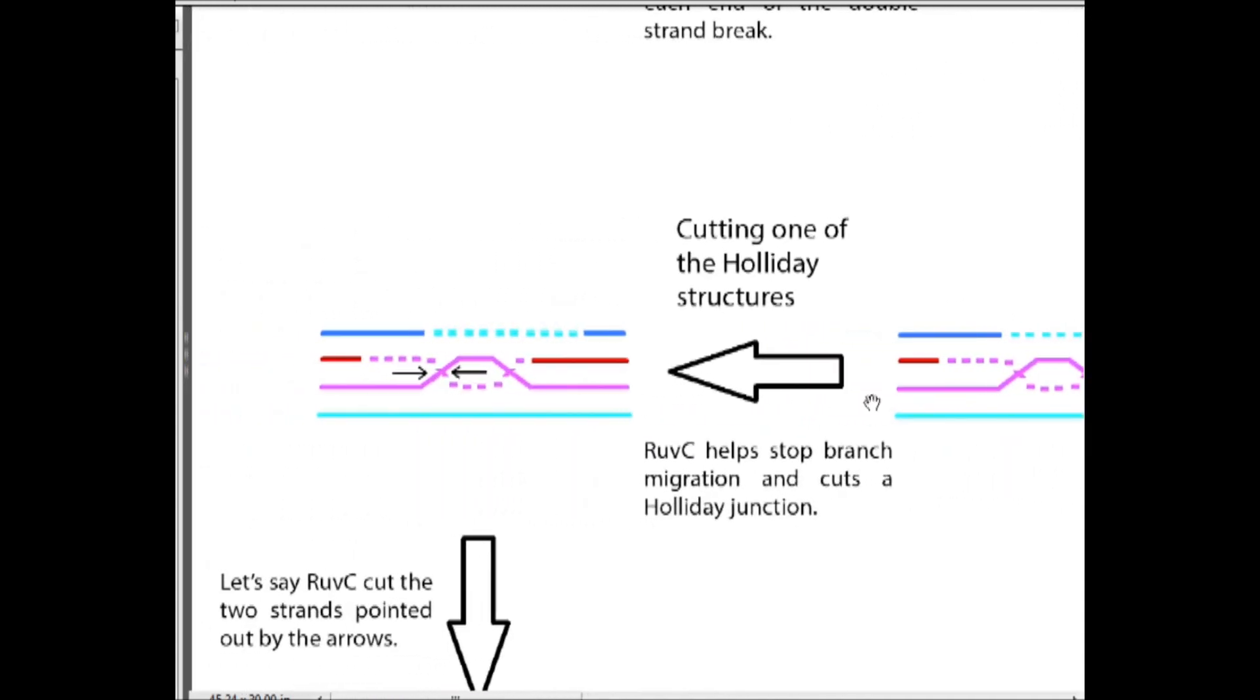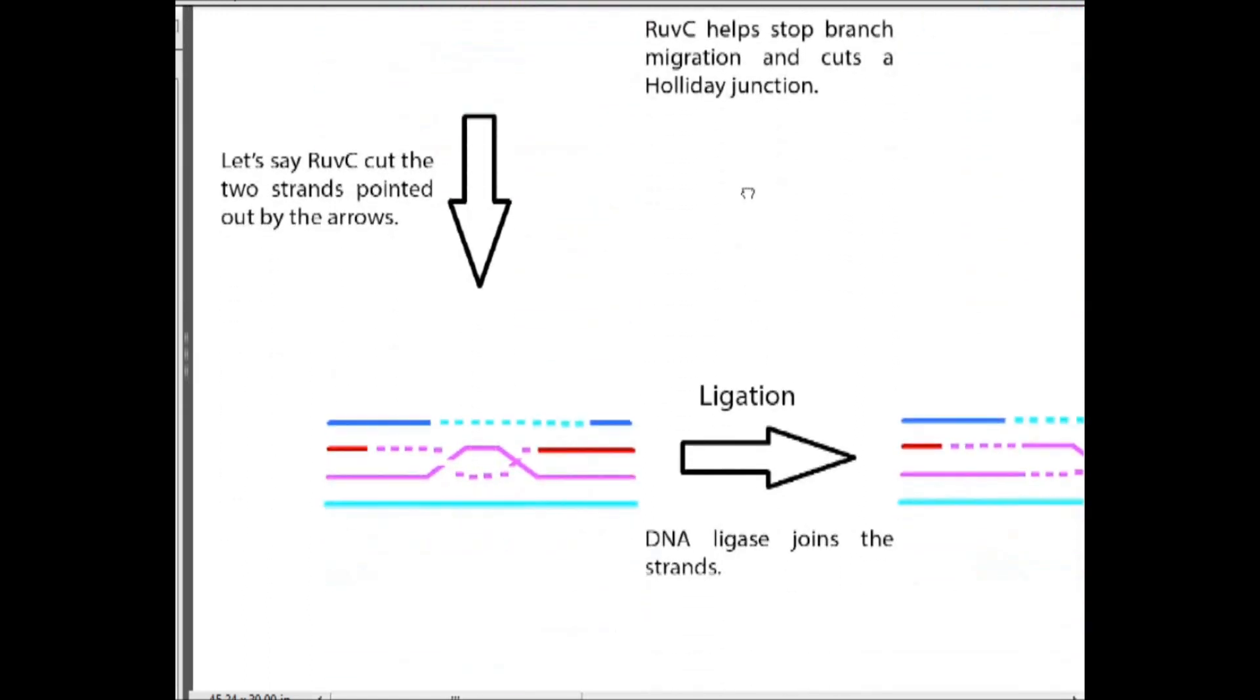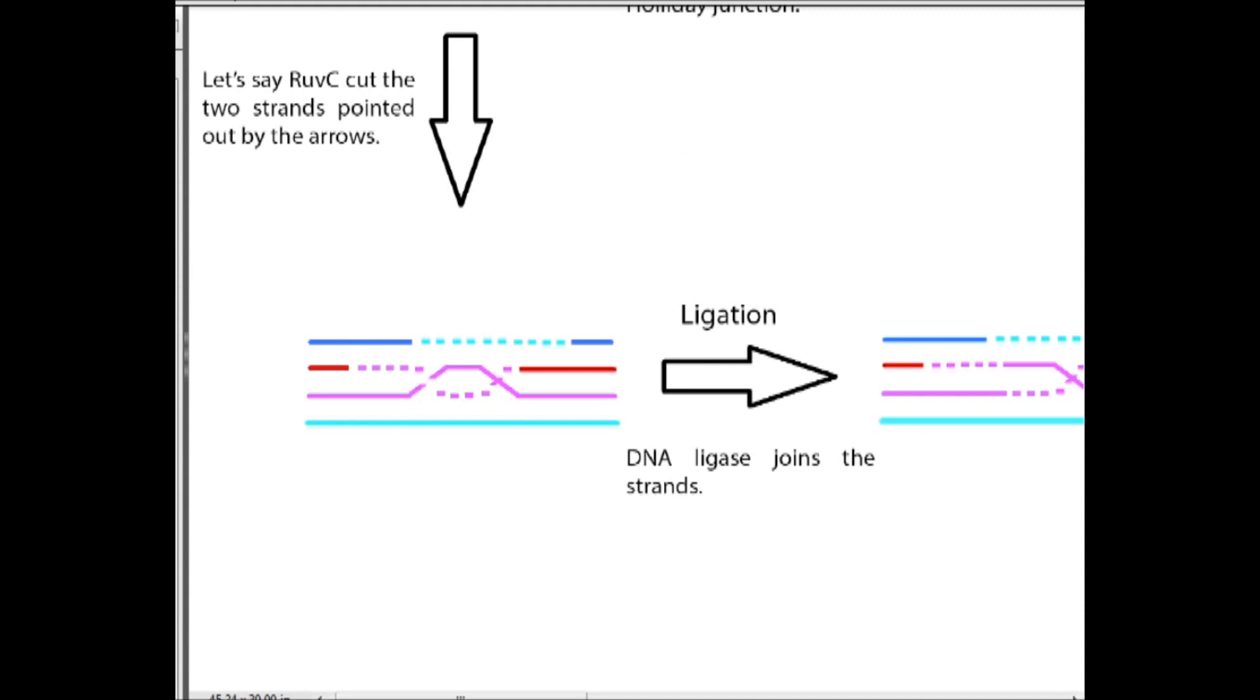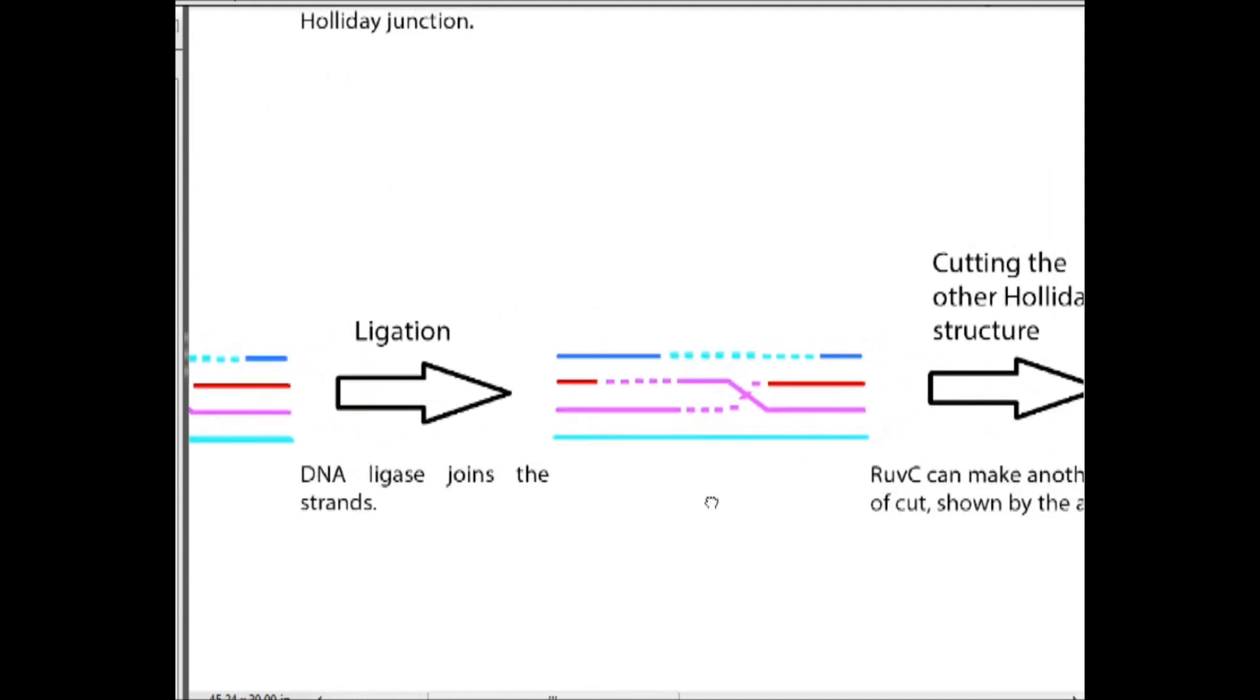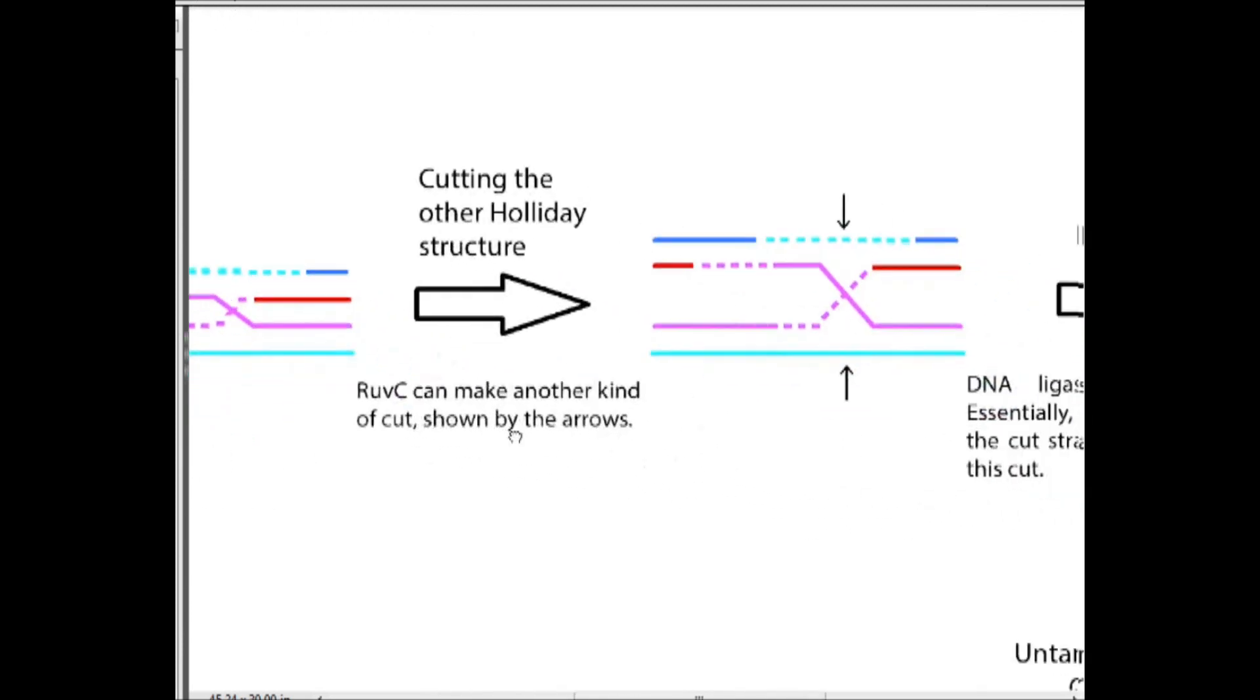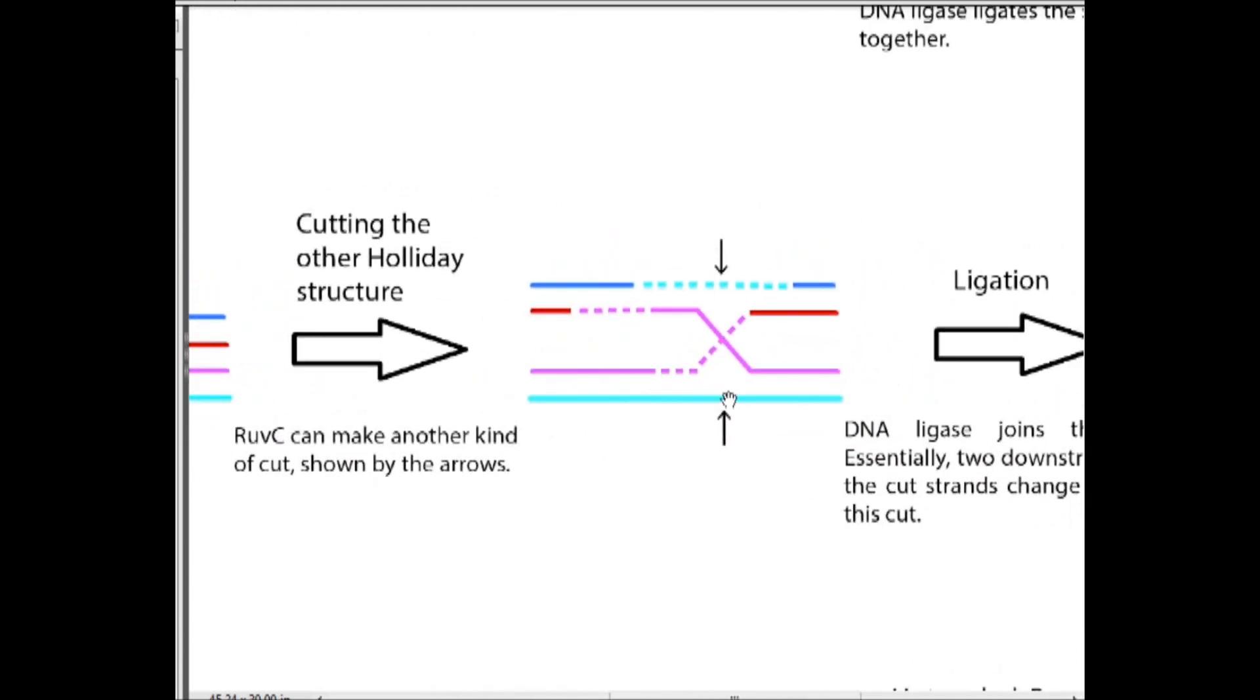Finally RUVC comes in, stops the migration of these Holliday structures, stops this branch migration, and then makes a cut in the Holliday structures. Let's say cut right here. We would ligate and be left with only one more Holliday junction to take care of. Finally it would cut right here. It could cut here again, but let's say it cuts over here and then we would ligate.